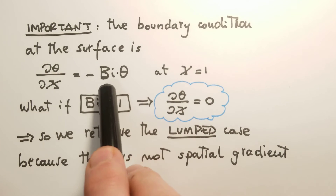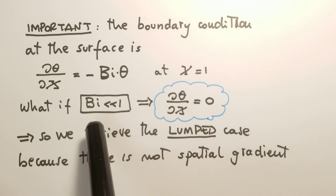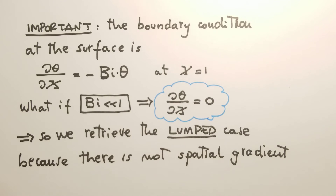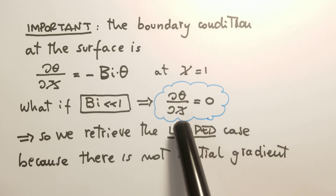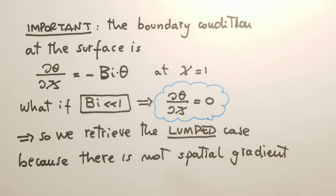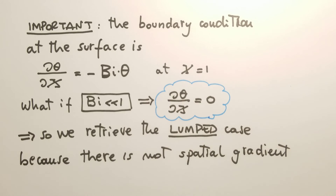Let's look more closely at the boundary condition. If the Biot number tends to zero, then the gradient of the non-dimensional temperature with respect to X* equals zero at the surface. Combined with the zero-gradient condition at the symmetry line, the temperature gradient must be zero everywhere — which is exactly the approximation used in lumped system analysis. This is another way to show that as the Biot number goes to zero, temperature can be approximated to depend only on time.